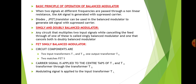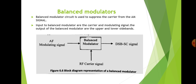There are different kinds of balanced modulator — singly and doubly balanced modulator. Any circuit that multiplies two input signals while cancelling the feed-through of one of these inputs is called a singly balanced modulator. If it cancels both inputs, it is called a doubly balanced modulator. The balanced modulator multiplies the modulating signal with the carrier signal, and as a result, the carrier signal is suppressed at the output, so we get a double sideband suppressed carrier signal.